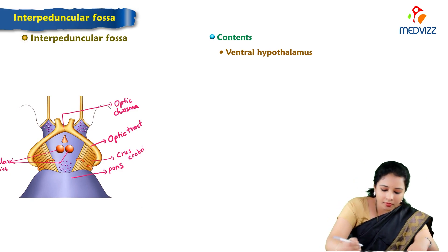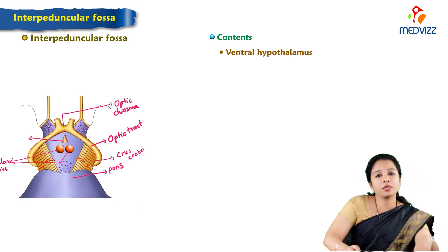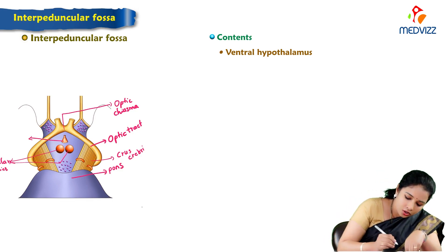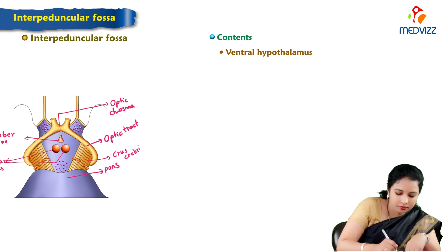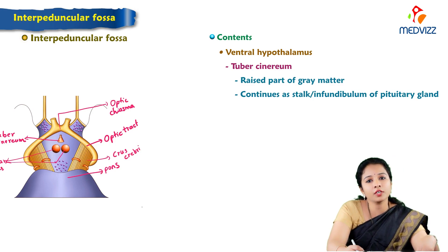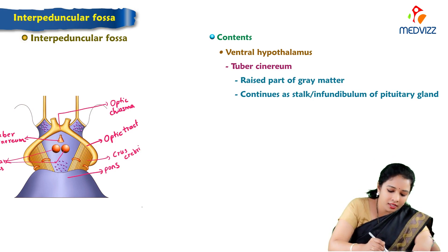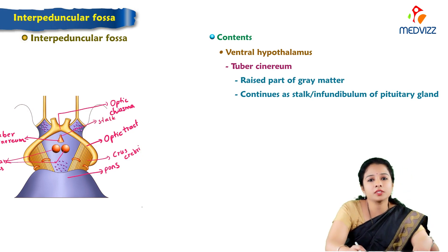The tuber cinereum is also a content of the interpeduncular fossa. The tuber cinereum is the base of the stalk of the pituitary gland, which continues as the infundibulum of the pituitary gland. It is the raised part of grey matter that continues as the stalk or infundibulum of the pituitary gland, and the stalk of the pituitary gland is also appreciated here.